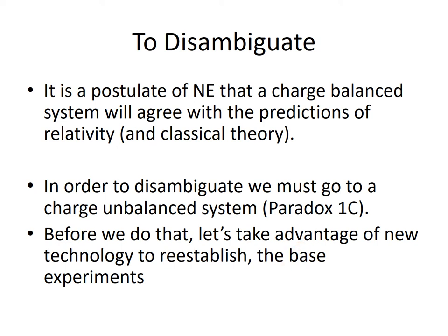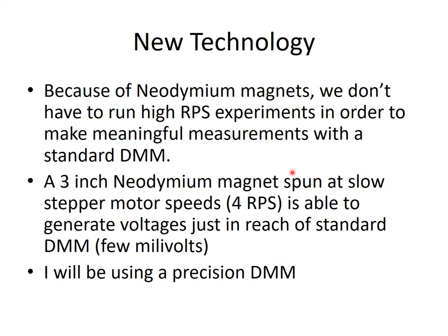In the meantime, one thing we can do is take advantage of new technology to reestablish the base experiments. Because of neodymium magnets we don't have to run these experiments at the high RPMs required in the previous days. The new three-inch neodymium magnets are about ten times more powerful than previous magnets, so the slow speeds of a stepper motor — around four revolutions per second — are able to generate voltages just in reach of a standard DMM, a few millivolts.